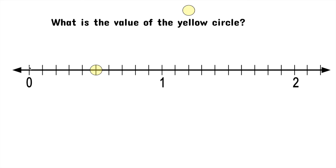From here — zero — to this little tick mark right here, that's one tenth. And then from here to here is another one tenth and another one tenth and another one tenth and another one tenth.